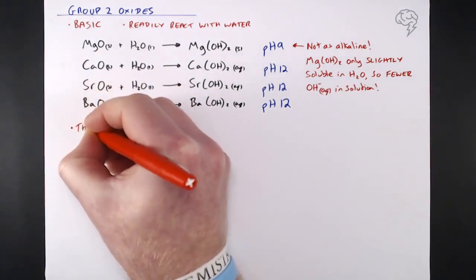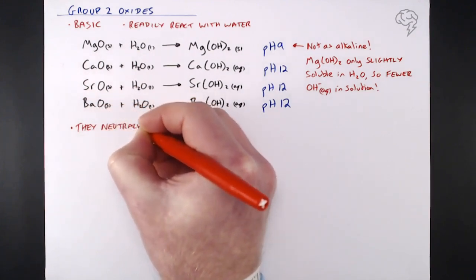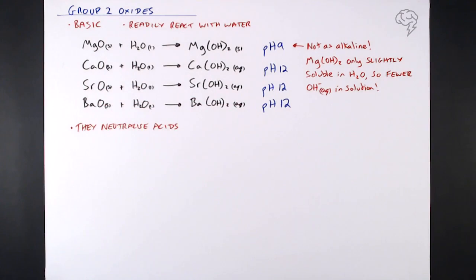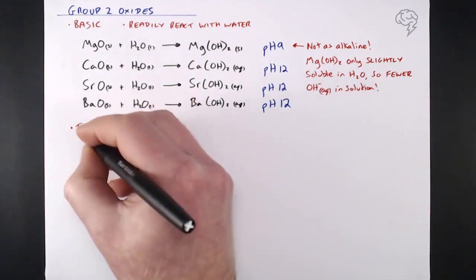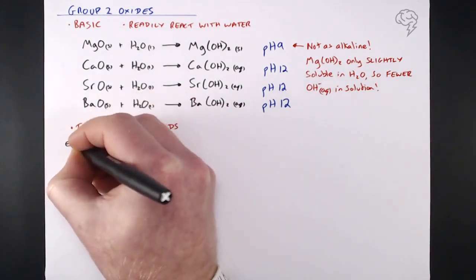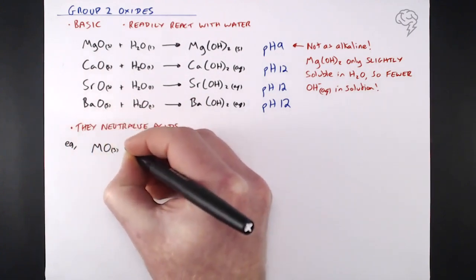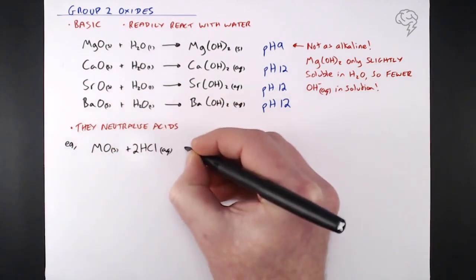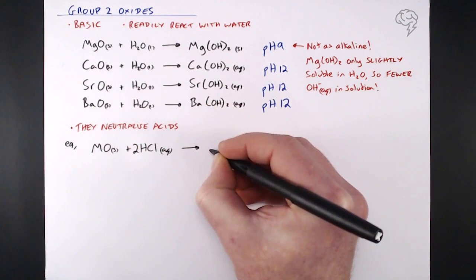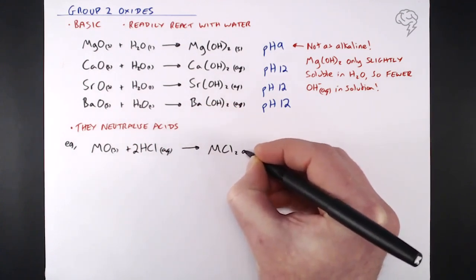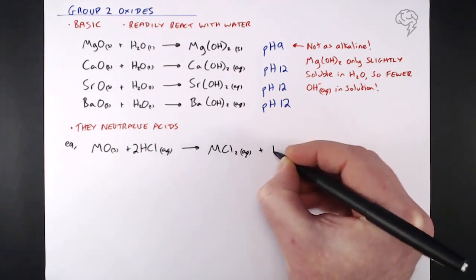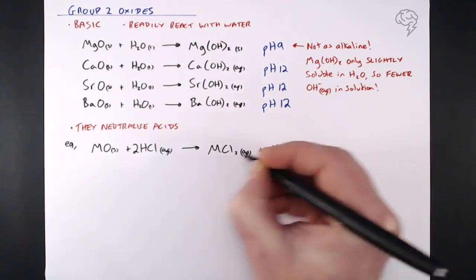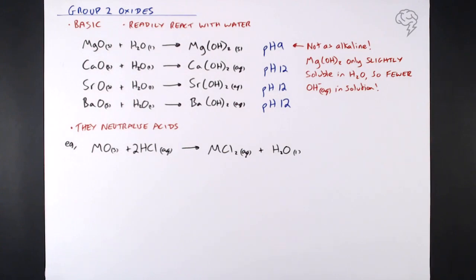The second reaction of group 2 oxides: because they're basic, they neutralize acids. Using M to represent any group 2 oxide, MO reacting with 2 HCl(aq) gives the metal chloride salt — definitely aqueous, as all group 2 chlorides are soluble in water — plus water. That's a classic neutralization reaction between a metal oxide and an acid forming salt and water.